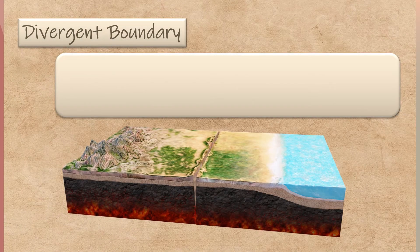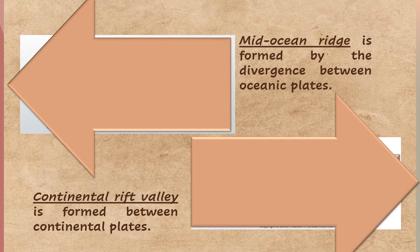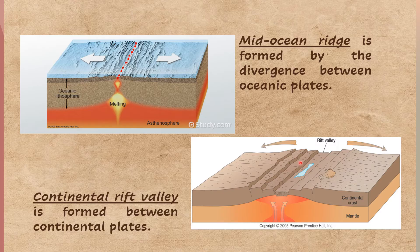The first type of plate boundary is divergent boundary. It is a region where the crustal plates are moving apart. The formation of oceanic ridges and rift valleys are indications that the crust is spreading apart. Mid-ocean ridges are formed by the divergence between oceanic plates, while continental rift valleys form between continental plates. As the plates separate, new materials from the mantle ooze up to fill the gap. These materials will slowly cool to produce new ocean floor, and that is divergent boundary.